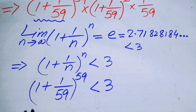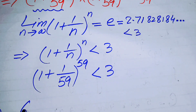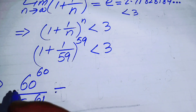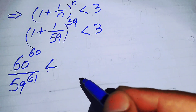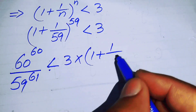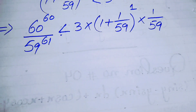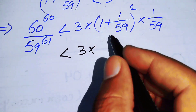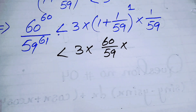Replacing (1 + 1/59)^59 with the bound less than 3, the expression 60^60 / 59^61 is less than 3 × (1 + 1/59) × (1/59). Simplifying, this becomes 3 × (60/59) × (1/59).